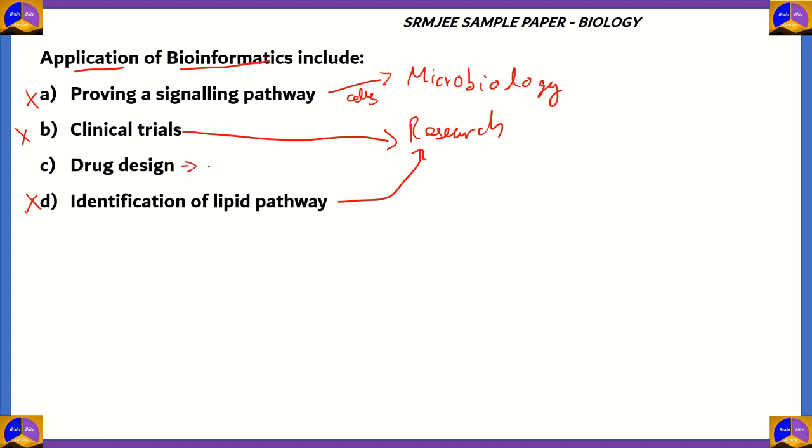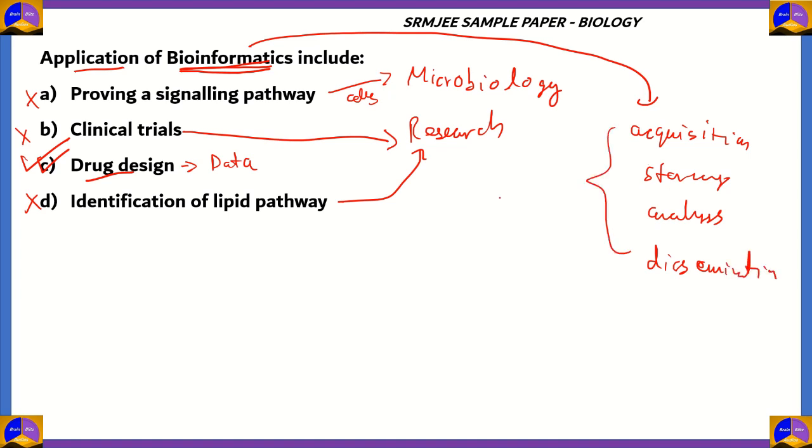Drug design, on the other hand, requires data. And when you have biological data being stored, acquired, analyzed, and disseminated, option C, that's drug design, will be an application of the science, the branch of science that is bioinformatics. So bioinformatics is the branch of biology that involves an acquisition, storage, analysis, and dissemination of biological data, which again is very useful in finding out which drugs are best to the body for a particular pathogen for a particular symptom.